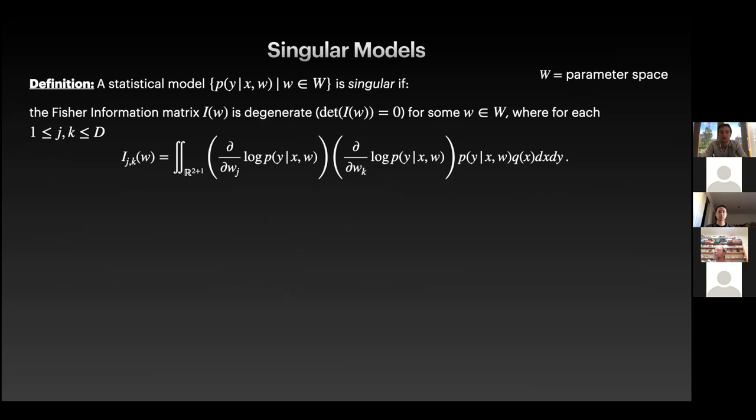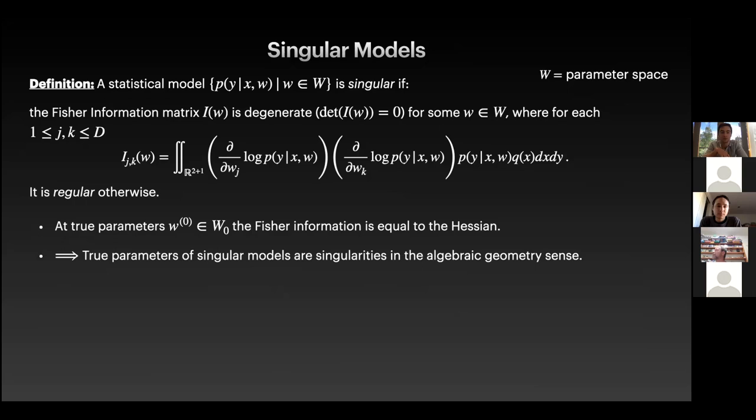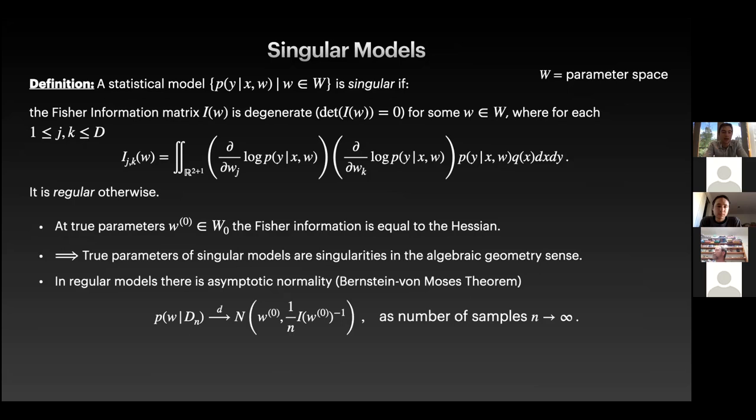Now, even though this formula may look a bit strange, in actual fact, if the truth is realizable, then the Kullback-Leibler divergence is just the Euclidean distance between the model and the true network weighted by the distribution of the inputs. So, one of Watanabe's key insights is that the geometry of this Kullback-Leibler divergence is of fundamental importance to the statistical learning procedure. This brings us to his singular learning theory. So, a model, a statistical model is singular if its Fisher information matrix is degenerate for some parameter in parameter space. And it is regular otherwise.